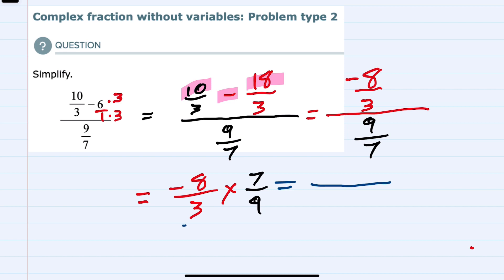The denominators, 3 times 9, would give us a 27 denominator, and the numerators, minus 8 times 7, would give us a minus 56. So our simplified fraction is going to be minus 56 over 27.